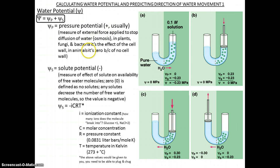There are examples where pressure potential could be negative, like in example D that you can see in transpiration where water is being pulled up.